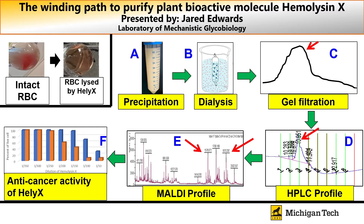Looking at part A, we see where we're beginning the purification process — removing the base plant materials from the initial extraction. We're then able to subject that sample to dialysis, where we're removing the salts from the previous step. This dialyzed sample is then subjected to gel filtration or size exclusion chromatography, where we can separate it out by size.